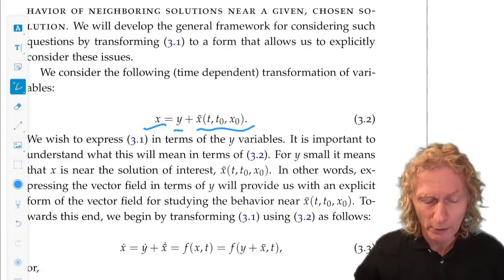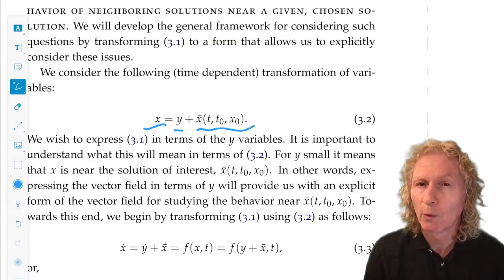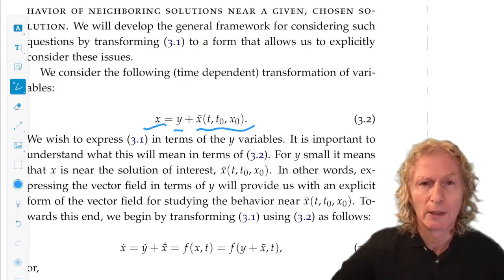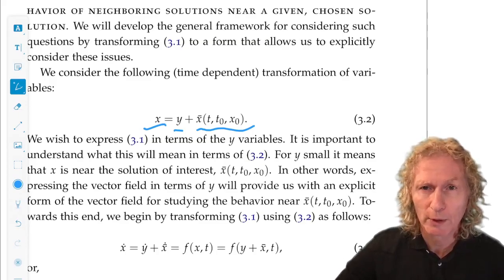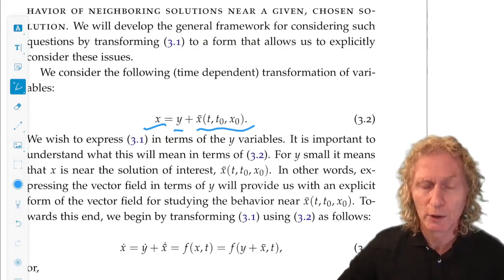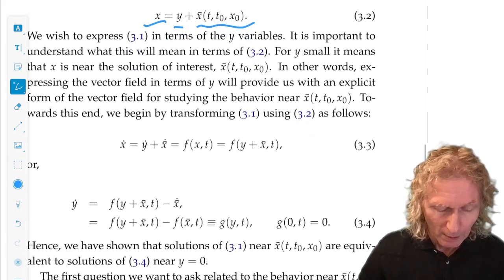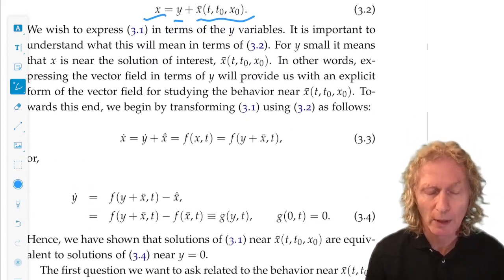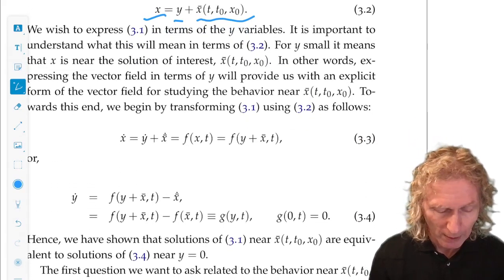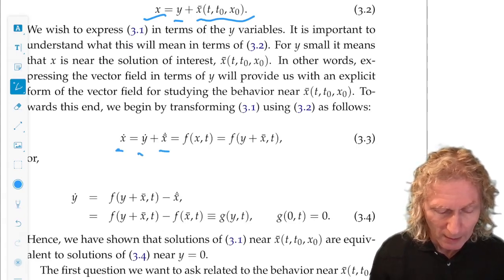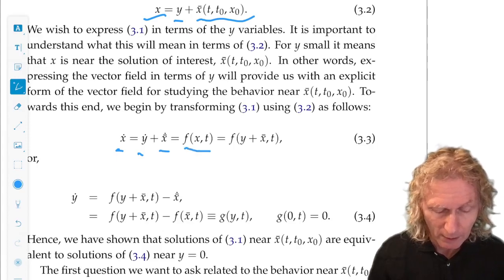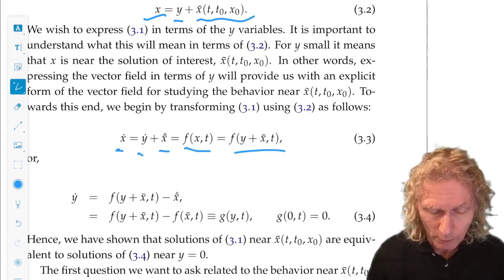Now what we're going to do is rewrite the original ODE in terms of this new y coordinate. We know the interpretation of y from its definition in (3.2). So we substitute it into the equation. Differentiate it. ẋ is ẏ plus x̄̇. And ẋ is f(x,t). But x is y plus x̄, and we substitute it in.